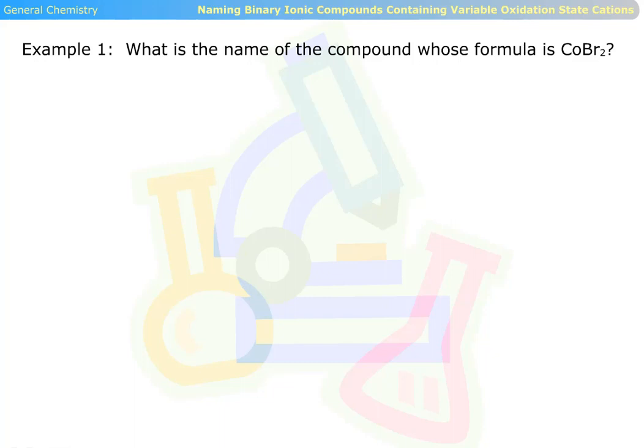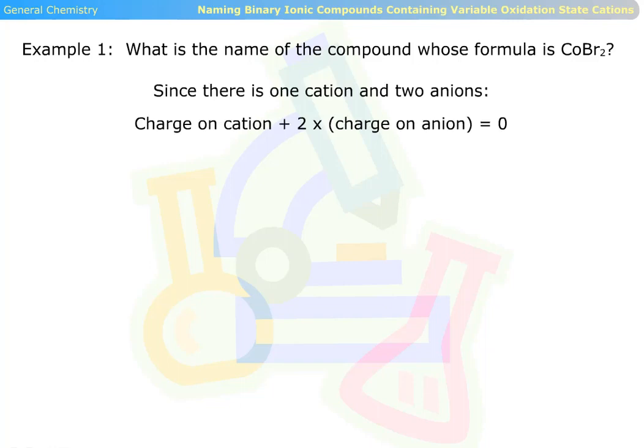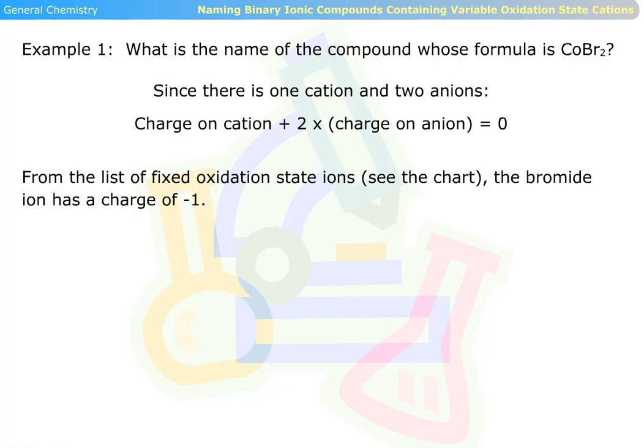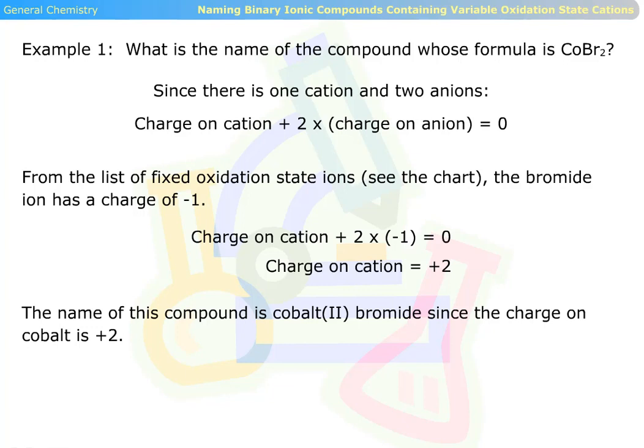Example one. What is the name of the compound whose formula is CoBr2? Since there is one cation and two anions, the charge on the cation plus two times the charge on the anion equals zero. From the list of fixed oxidation state ions, the bromide ion has a charge of negative one. Charge on cation plus two times negative one equals zero. Charge on cation equals positive two. The name of this compound is cobalt(II) bromide since the charge on the cobalt is positive two.